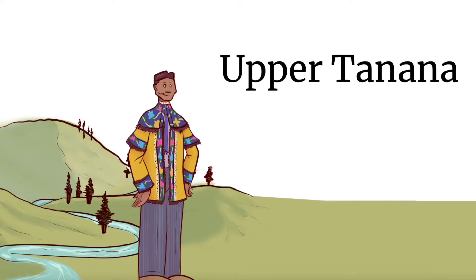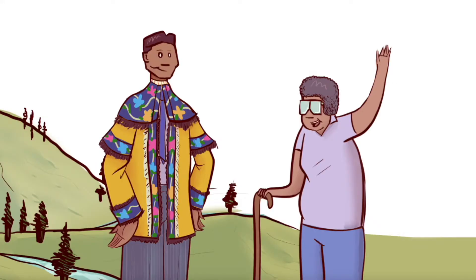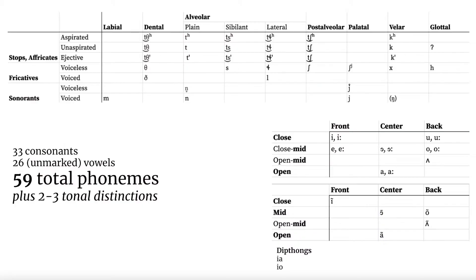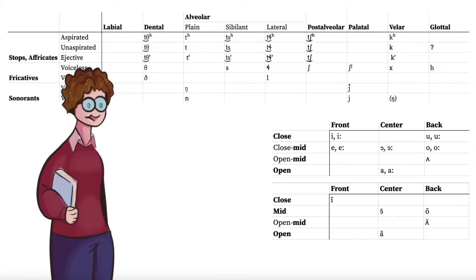Upper Tanana is most easily distinguished from neighboring Alaskan Dene languages by its massive phonemic inventory. To make matters more difficult, Lovick warns that the language has very few, if any, minimal pairs.